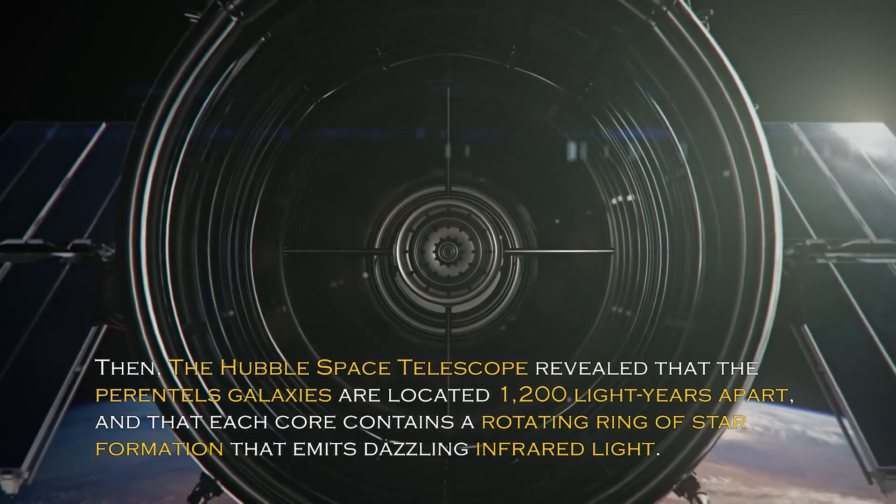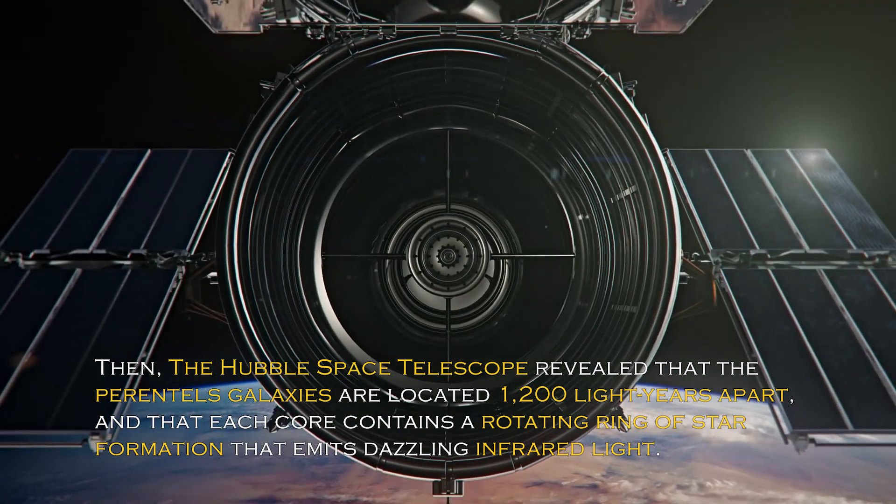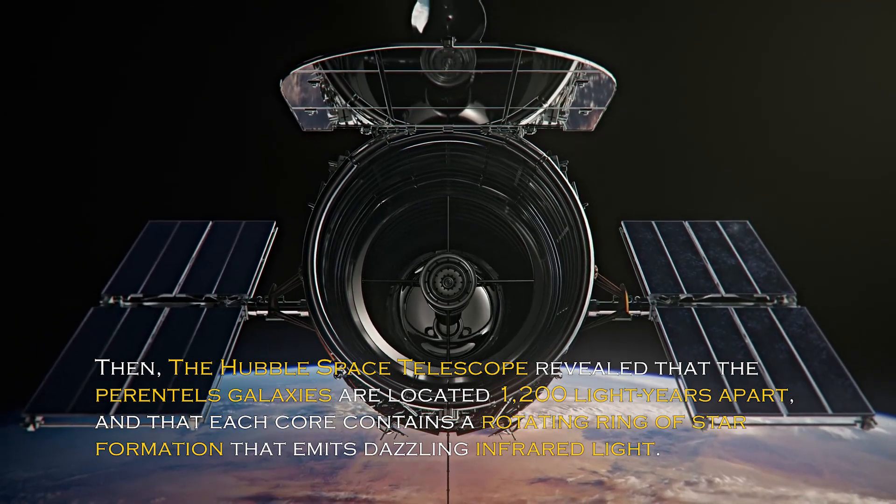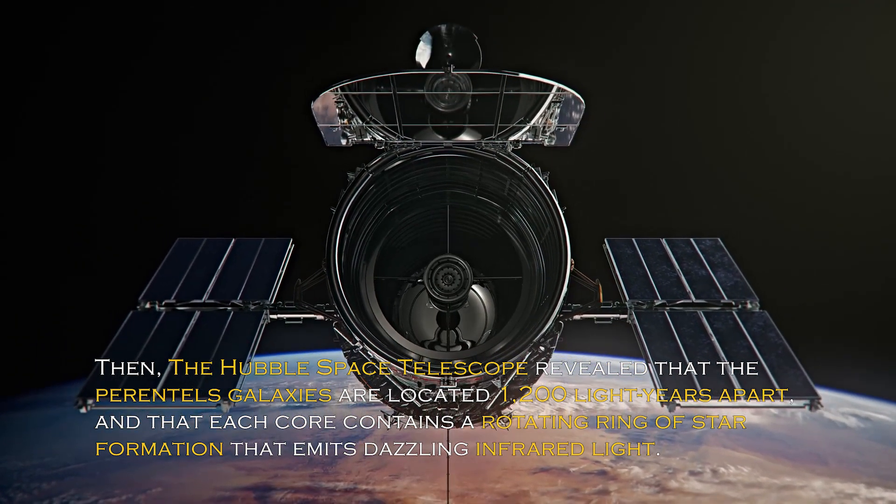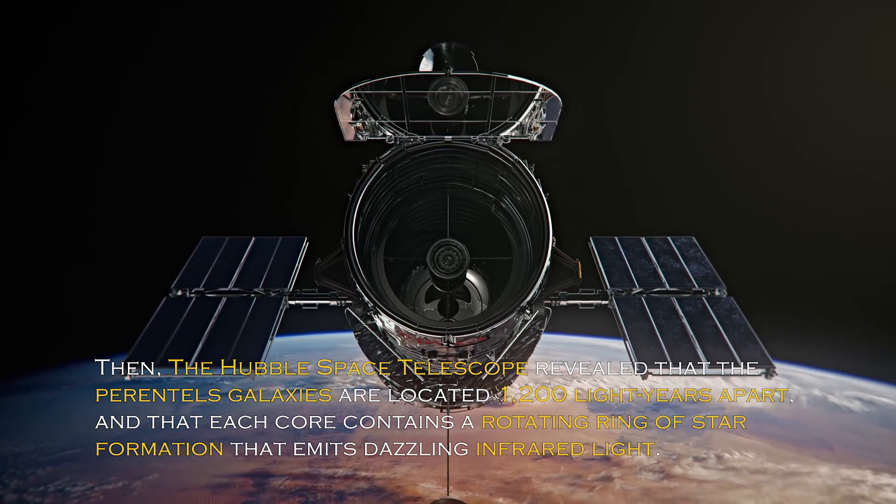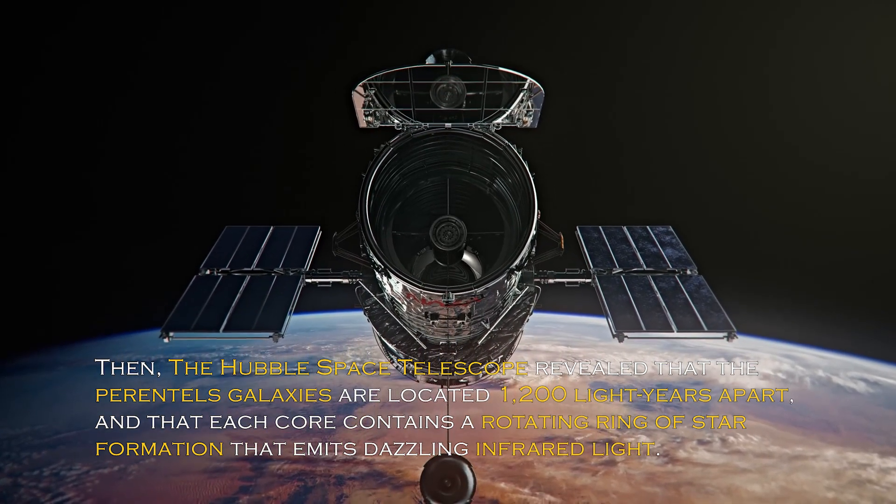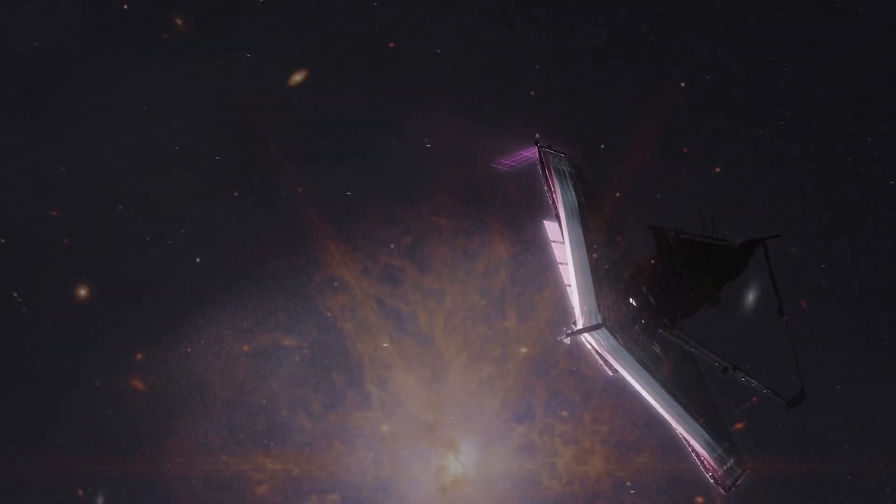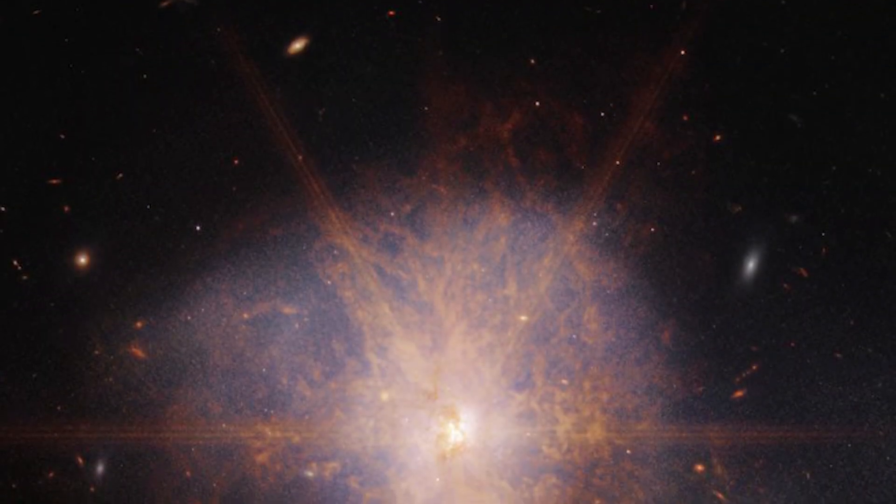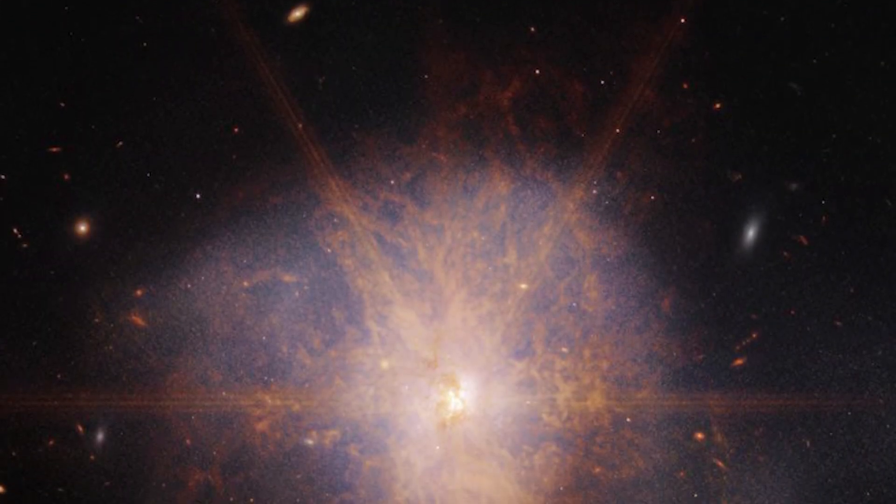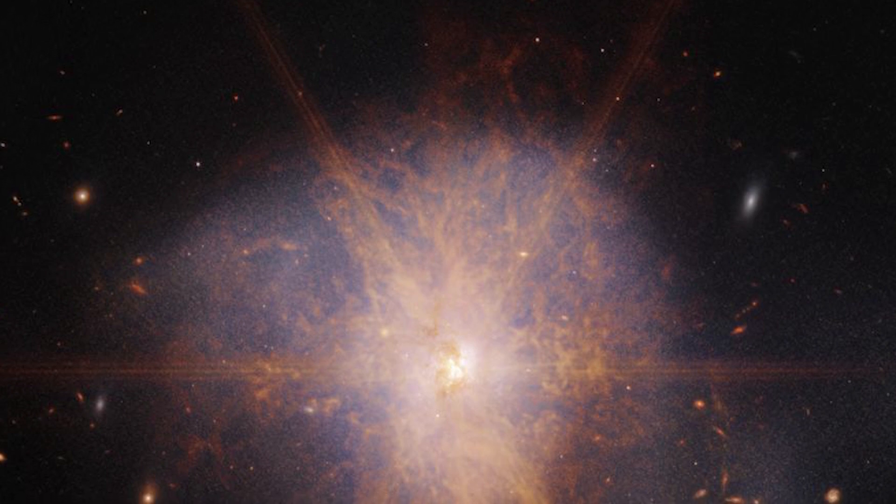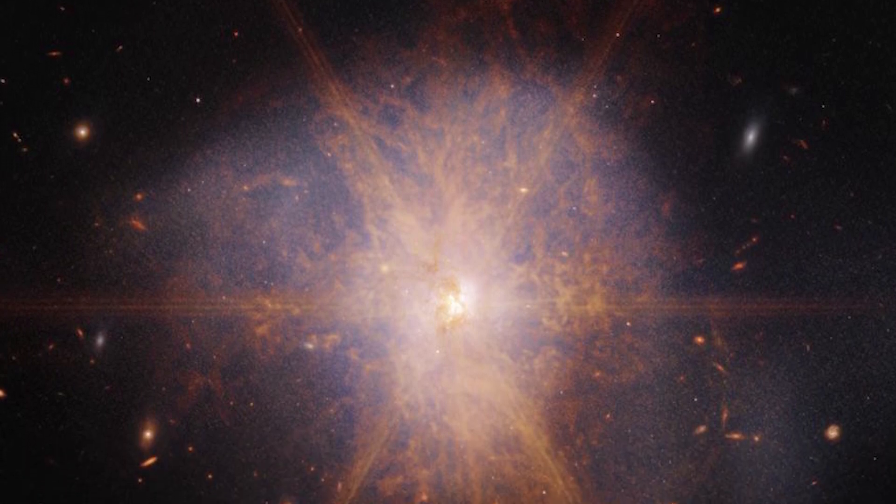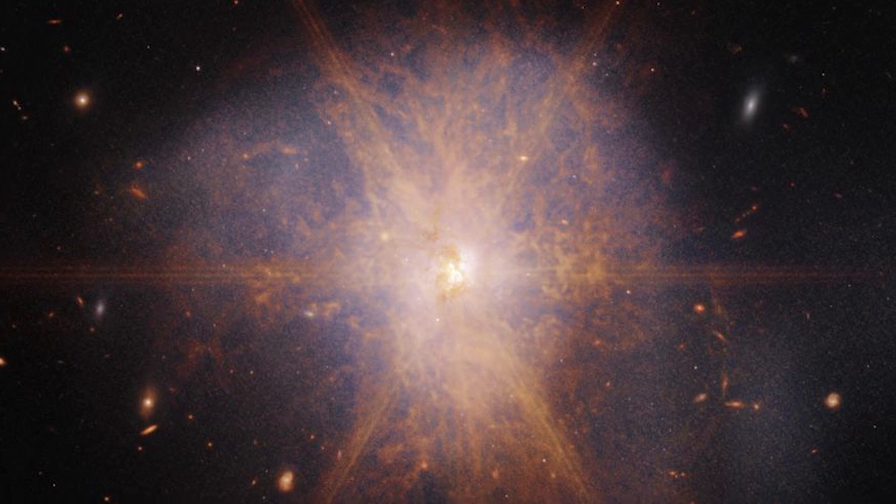The Hubble Space Telescope revealed that the parent galaxies are located 1,200 light-years apart, and that each core contains a rotating ring of star formation that emits dazzling infrared light. The latest views from the James Webb Space Telescope shows an impressive galactic merger. This image also shows faint tidal tails extending from the outskirts of the merger, indicating the gravitational pull between the two galaxies.